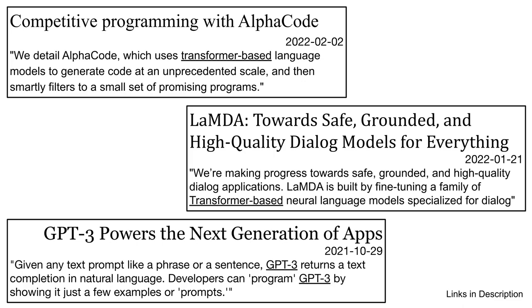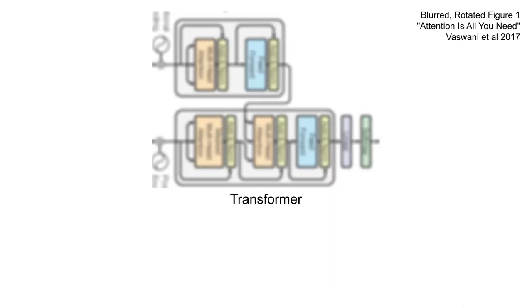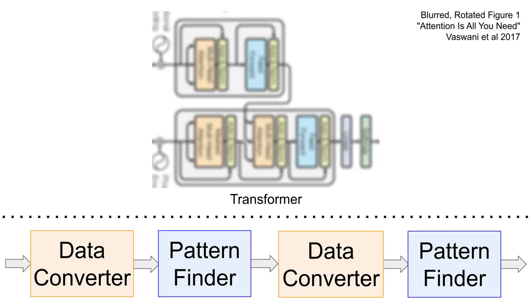This video is about transformers. So what is that high-level secret ingredient that makes them more effective? Here's the architectural diagram from the initial transformers paper — I blurred the details because there's a lot to unpack here. At a high level, we can see multiple layers of blue pattern finders, and before each of those, orange boxes which convert the data into a new form. These data converter boxes are the key to success of the transformer model — the neural network is able to look at data in a different way, making it easier to find patterns.